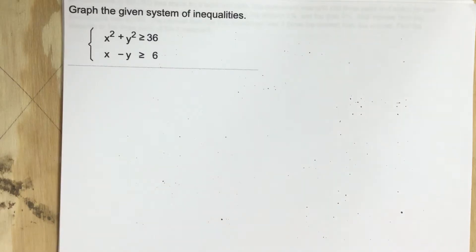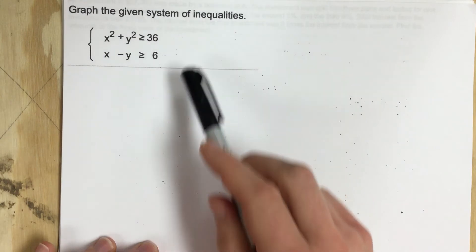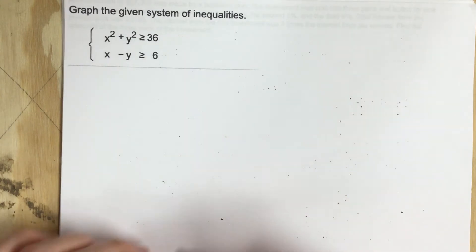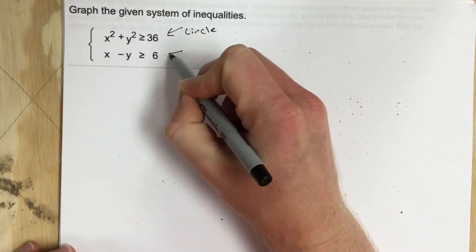This is problem number three for assessment number nine. In this problem it says graph the given system of inequalities. They give you a circle equation and they also give you a linear.